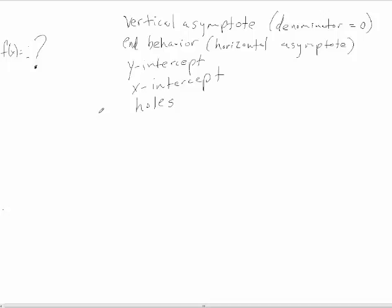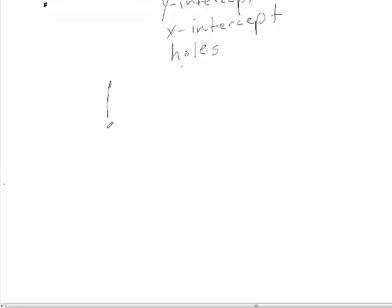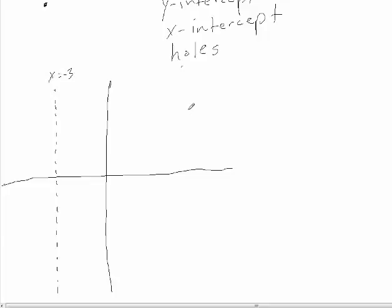To go from a graph to a function, we look for the asymptotes — what do they mean in terms of factors and behavior — along with x and y-intercepts and holes. So here's a graph with a vertical asymptote at the line x = −3 and a horizontal asymptote at y = 1.